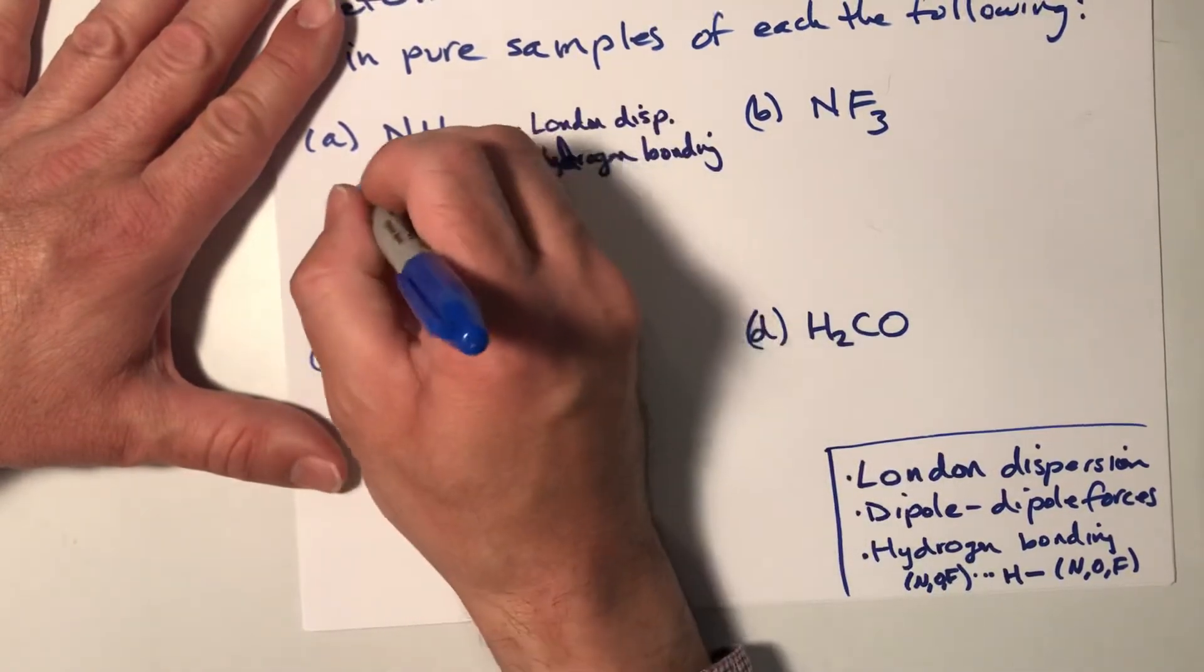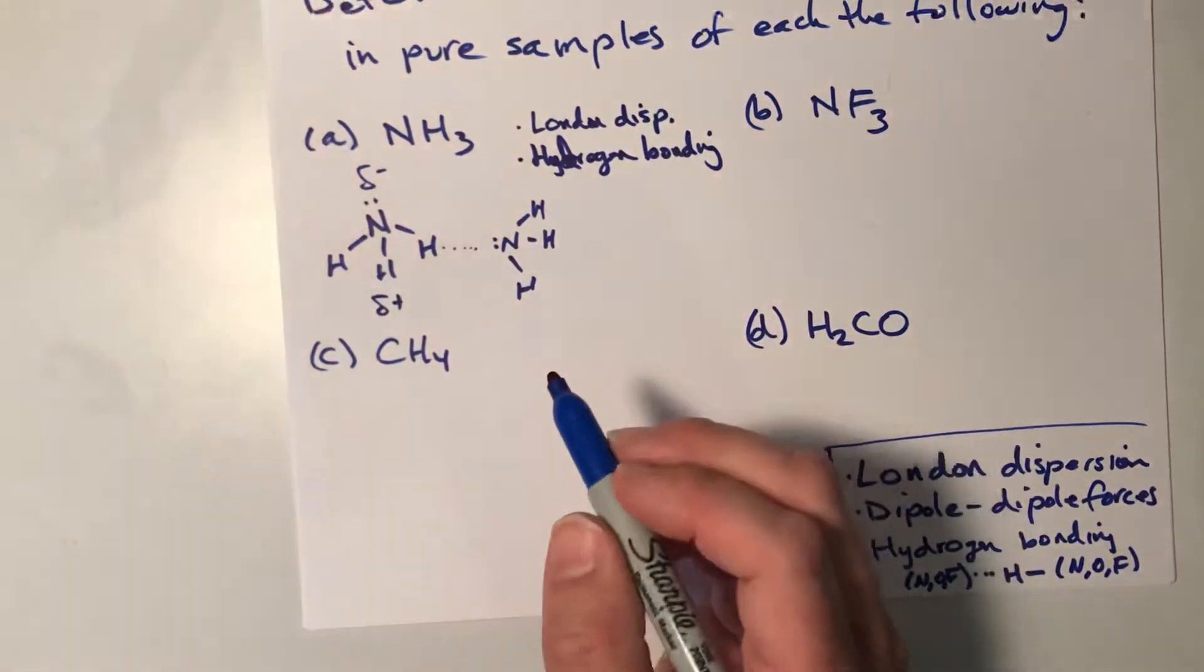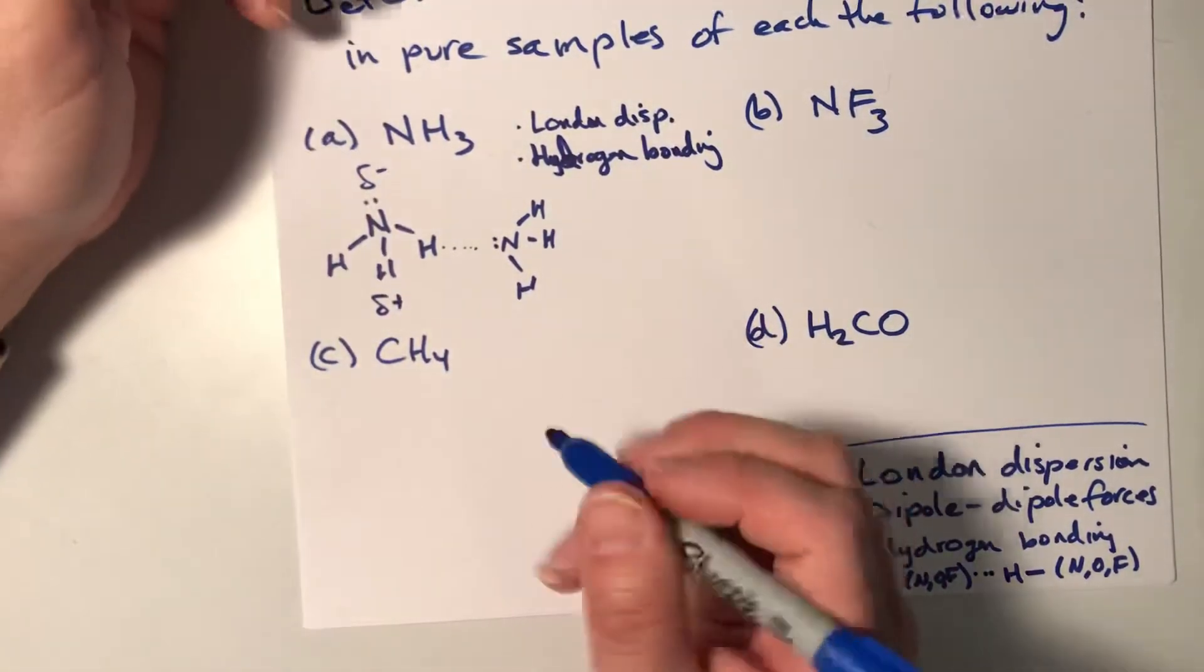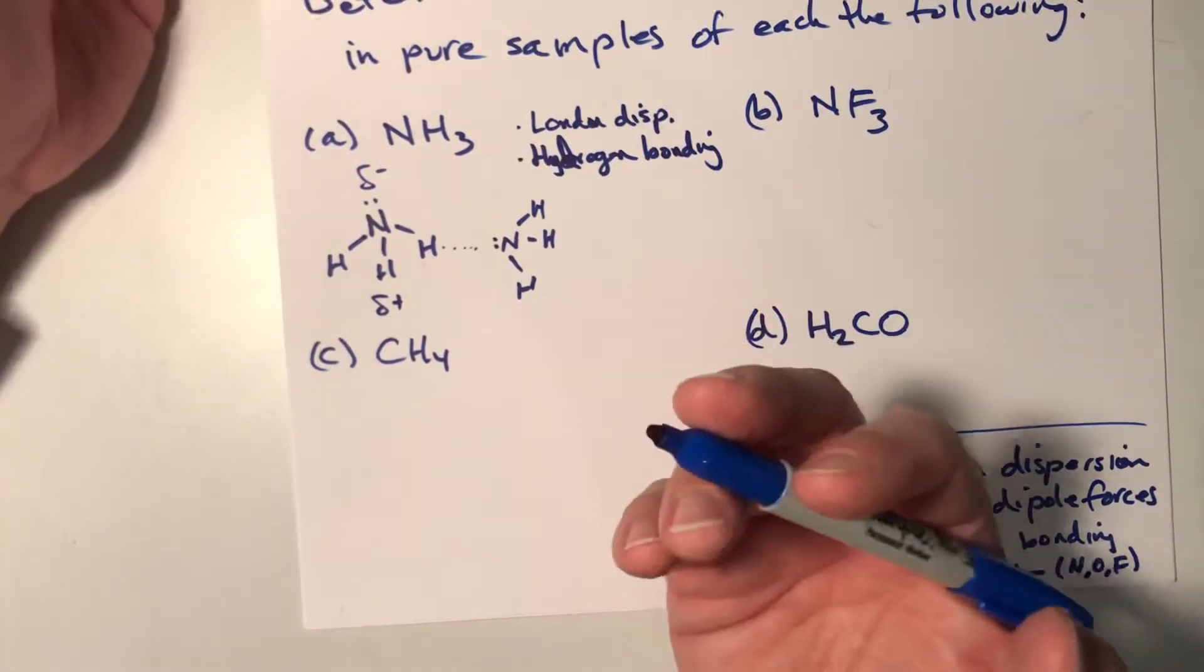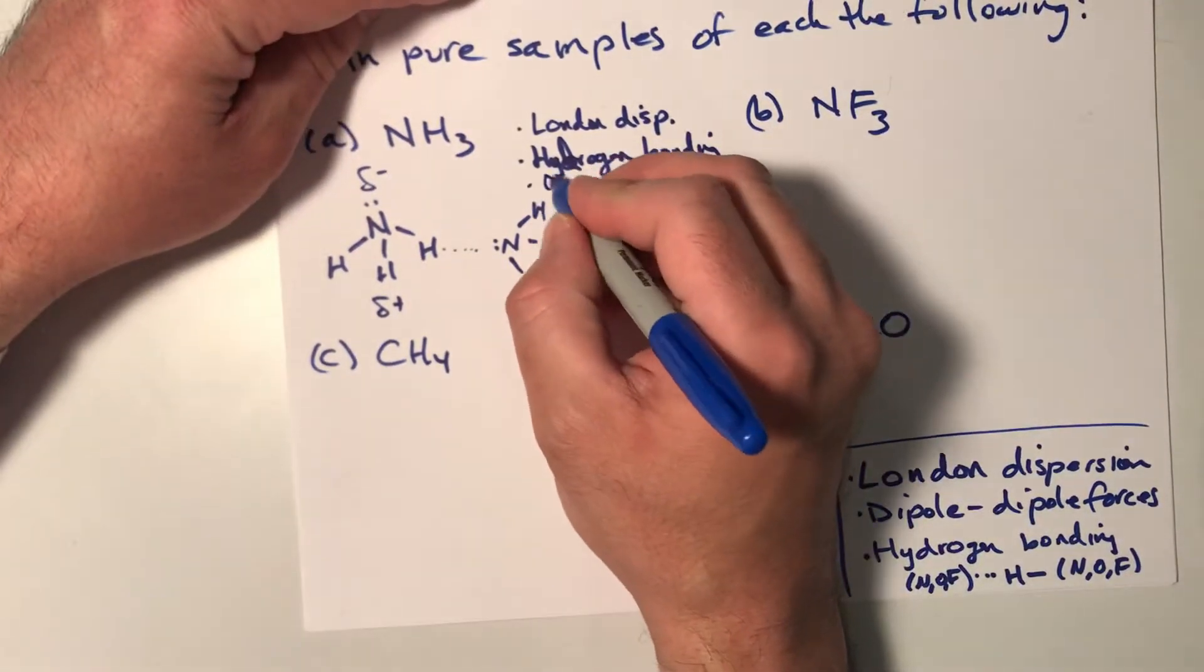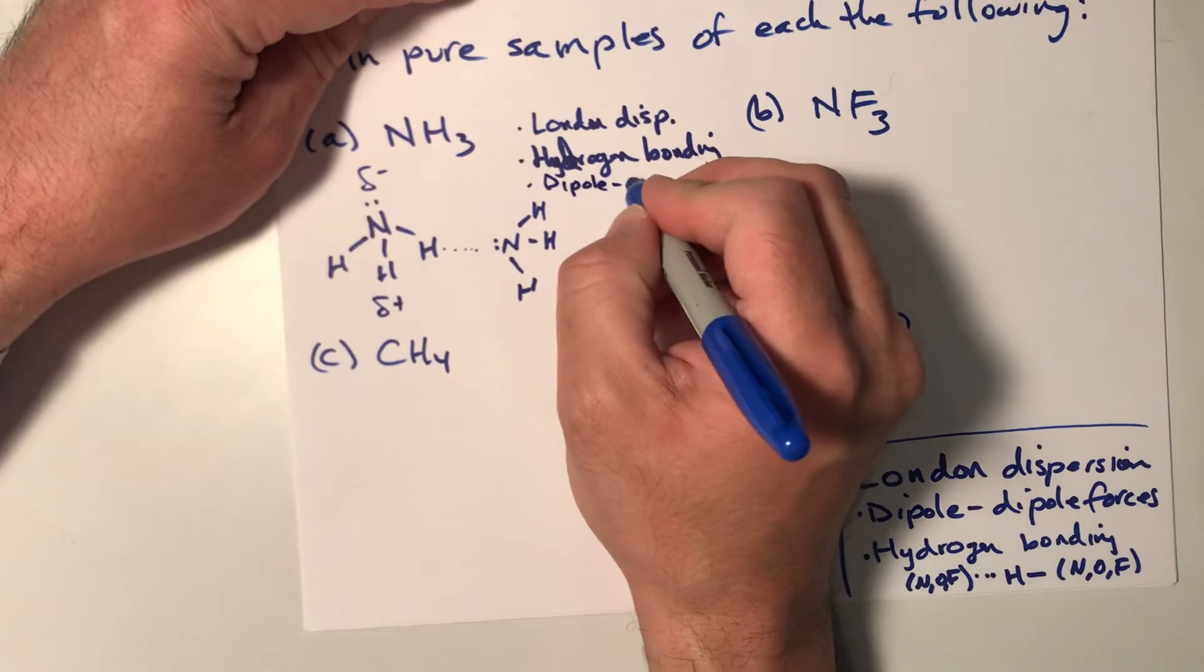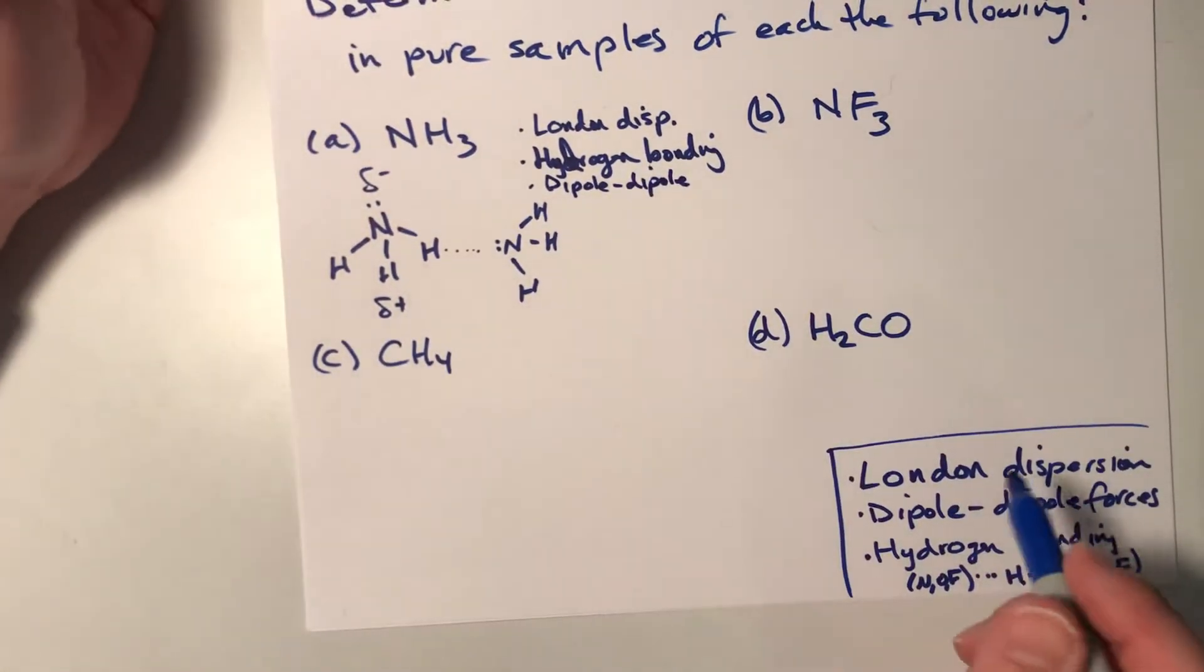This molecule has a permanent dipole moment, and so there's always an argument here of whether do you say it has dipole-dipole, or is dipole-dipole counted in the hydrogen bonding? In my opinion, they're slightly different. I would not count you off if you did not include dipole-dipole, but I would also give you credit if you did in this one case.